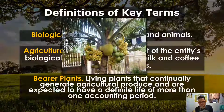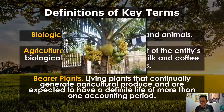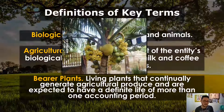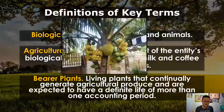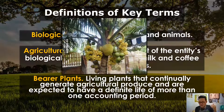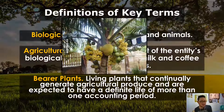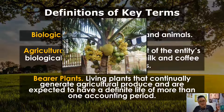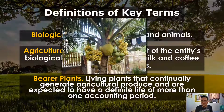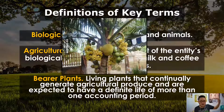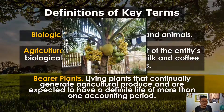Bearer plants. Earlier we were talking about plants harvested for logs or wood, and plants harvested for fruit. A bearer plant is different in that it continually generates agricultural produce and is expected to have a life of more than one accounting period. A tree harvested for its wood can no longer produce more wood next year, but a tree harvested for its fruits can continually regrow them every year. This is why bearer plants are separated from biological assets — bearer plants are reusable every year. So bearer plants are accounted for as property, plant and equipment, not as a biological asset.